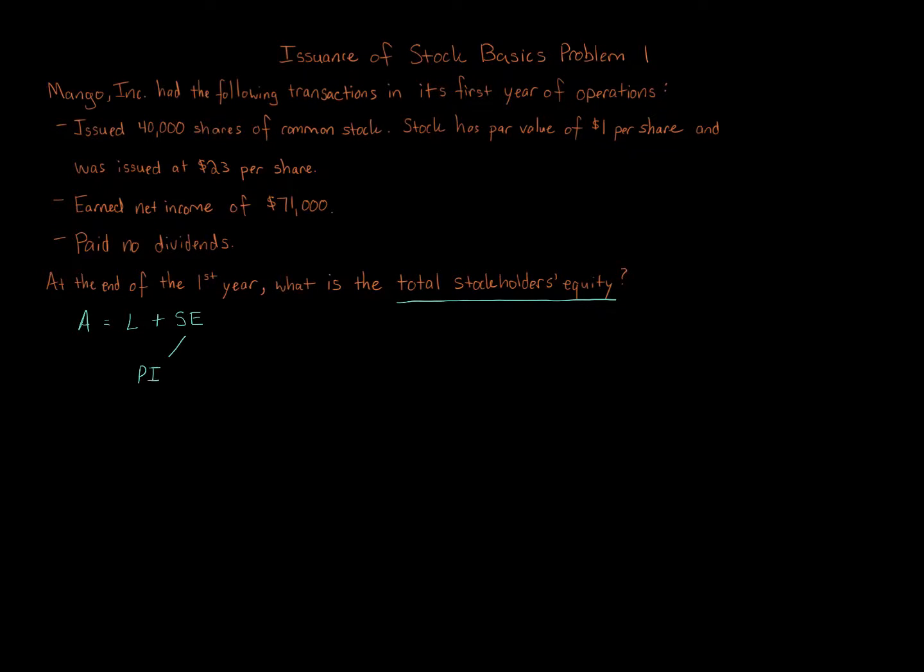Now we have our friendly acronym: WIRE. We use that a lot in various problems. W for withdrawals, I for investments, R for revenue, E for expenses.